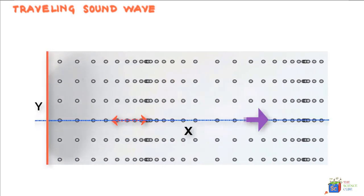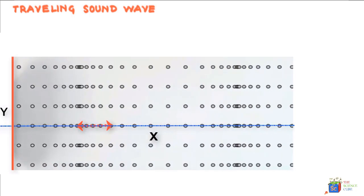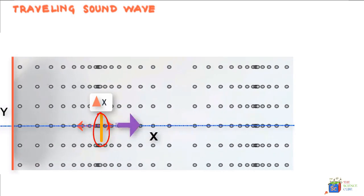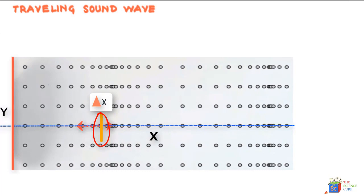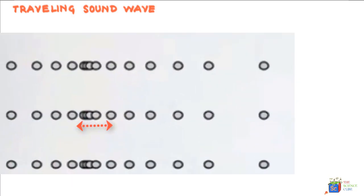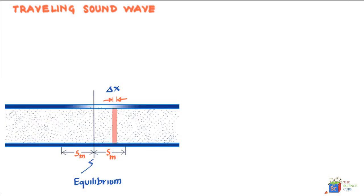You recall that in a transverse wave, the particle moves up and down about the y axis. So if you take a thin element of air of, say, width delta x, it'll oscillate about a mean position.